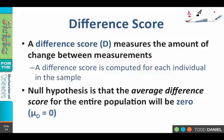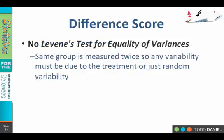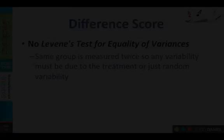Because the same group is being measured twice, we don't need to test for equality of variances. So SPSS is not going to produce a Levene's test when we use this repeated measures t-test.